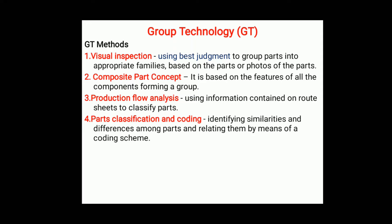The fourth method is parts classification and codification. After group formation, we proceed to codification and classification. We assign classification codes or numbers to similar parts so we can easily identify which group a part belongs to. This is the fourth method to create groups. These group technology methods will be used when we actually form or create groups in the next part.